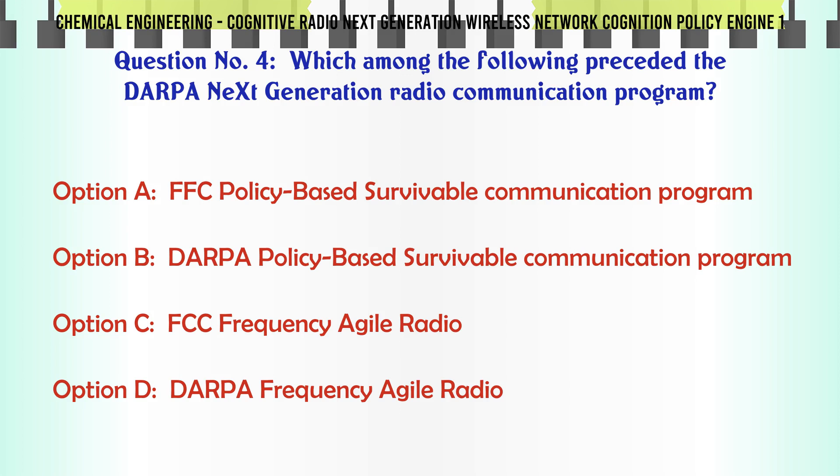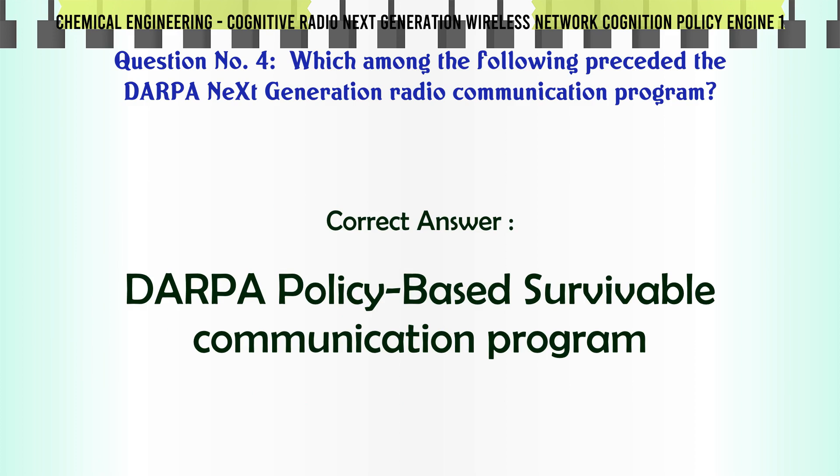Which among the following preceded the Next Generation Radio Communication Program? a. FFC Policy Based Survivable Communication Program. b. The Policy Based Survivable Communication Program. c. FCC Frequency Agile Radio. d. The Frequency Agile Radio. The correct answer is: The Policy-Based Survivable Communication Program.